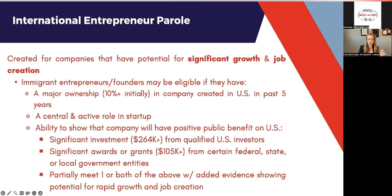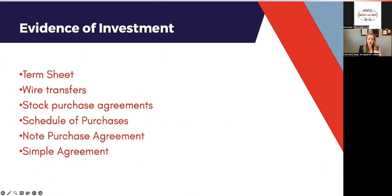Most people qualifying are probably coming under the qualified investor $264,000 threshold, or at least a portion of that. We need to show that you have received the investment — either that $264,000 or $105,000 — and what does that look like? Wire transfers, term sheets, purchase agreements, SAFEs — those types of things you would have when getting money from somebody investing in your company. We need to be able to document the evidence of the investment, which is not an overly burdensome request.